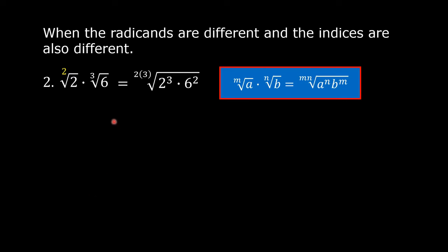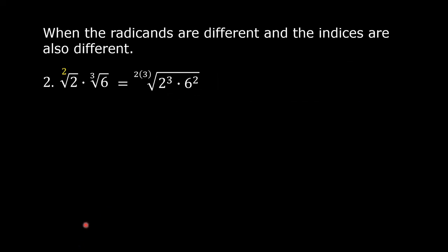So we have 2 times 3 for the new index. Then 2 raised to the index of the second, so 2 cubed. Then 6 raised to the index of the first, so 6 squared. Simplifying: 2 times 3 is 6, 2 cubed is 8, and 6 squared is 36.